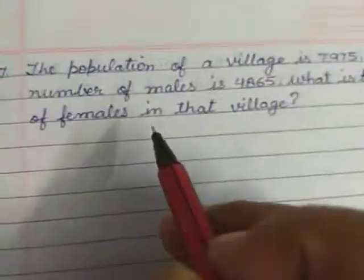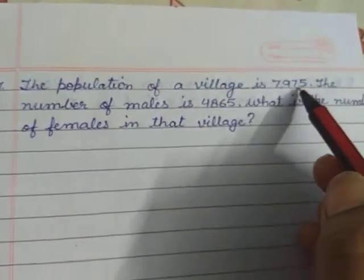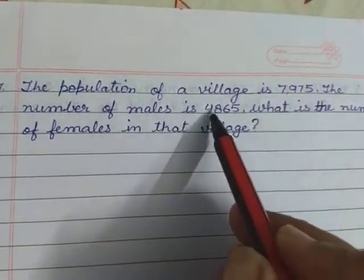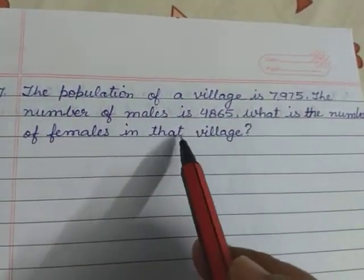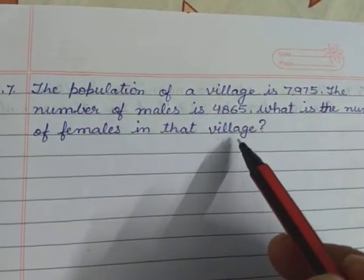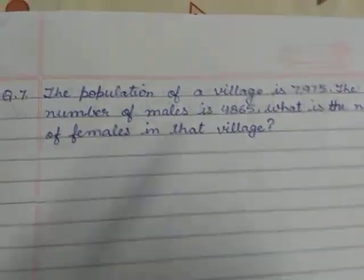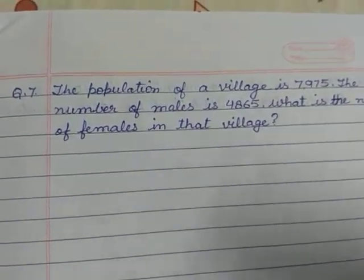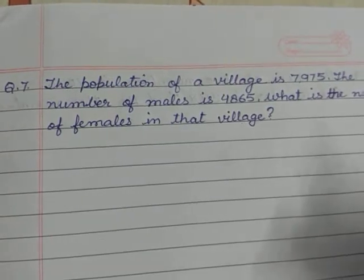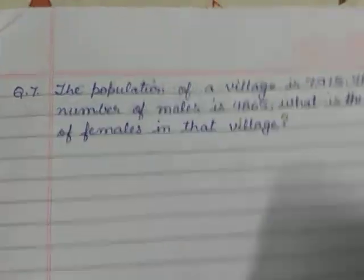Now question number 7. The population of a village is 7,975. The number of males is 4,865. What is the number of females in that village? Yeh bahut simple question hai. Is tarah ke questions pehle bhi aap logon ne kiye hain — class mein kiye, class mein itne bachche hain, usme se itne boys hain, toh girls kitni hongi. Is tarah ke questions kiye hain, class 2 mein bhi kiye hain, class 3 mein starting mein bhi kiye hain.